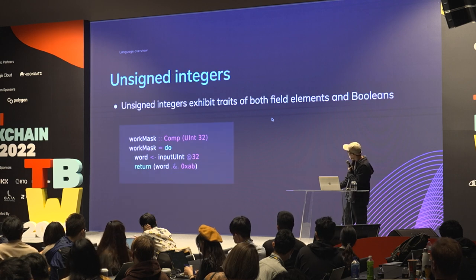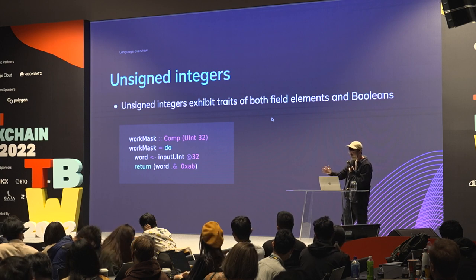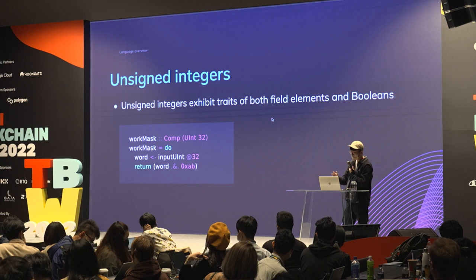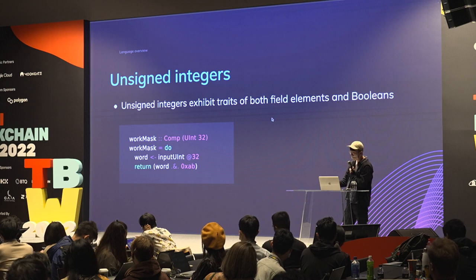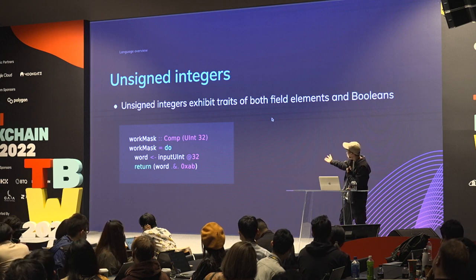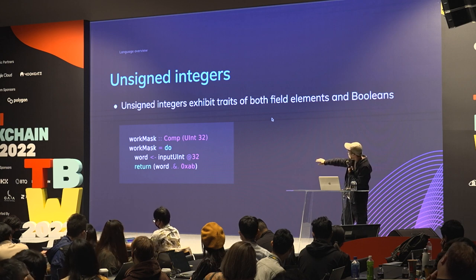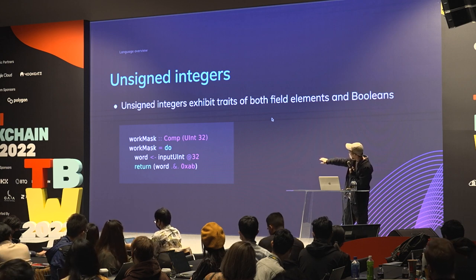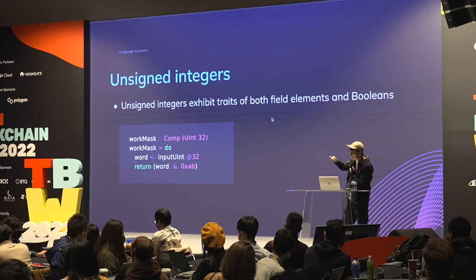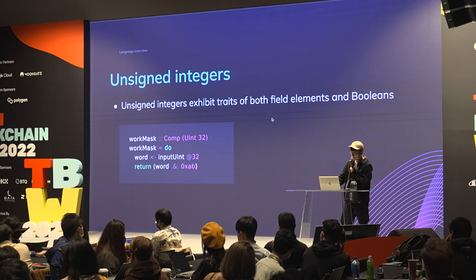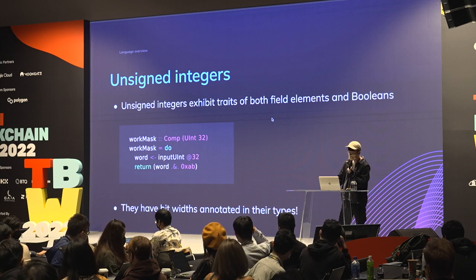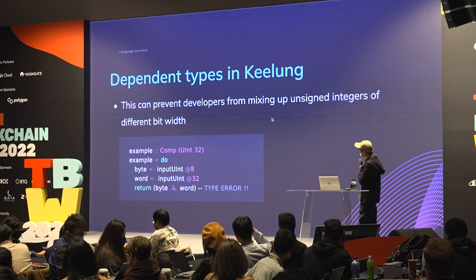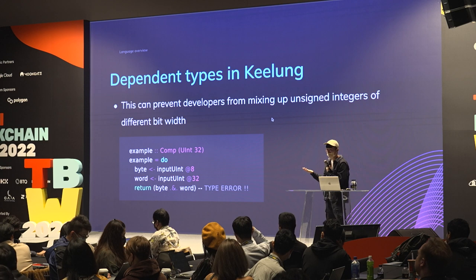Unsigned integers are like a combination of field elements and booleans — they possess traits of both data types, so you can do arithmetic but also logical operations. In this example, a developer asks for an unsigned integer of 32 bits and performs masking. You can see there's a number in the types, which is possible because Haskell has dependent type-like abilities.